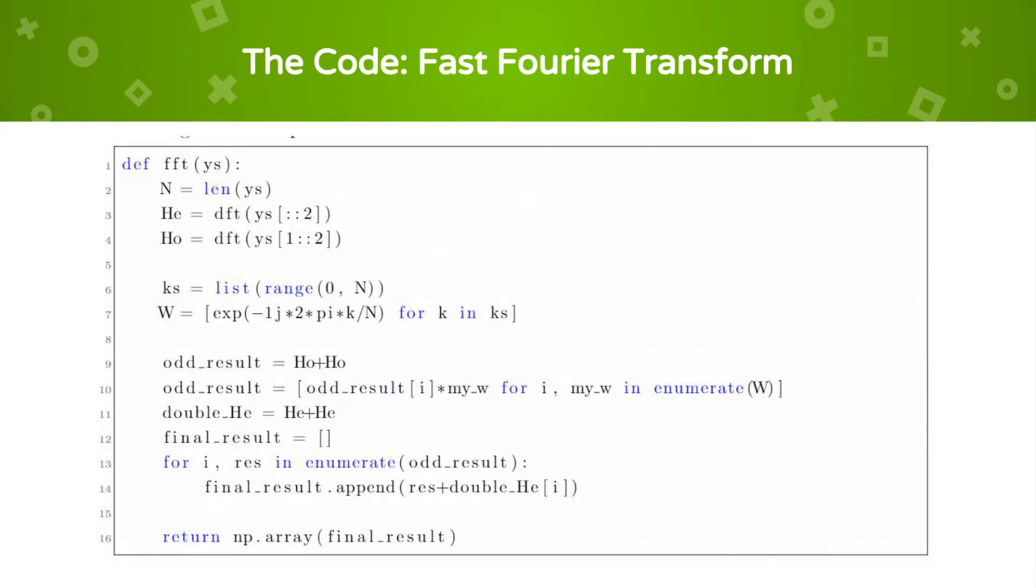Our Fast Fourier Transform function follows the equation just shown to calculate the Fast Fourier Transform of a list of values. In our Webcam Heart Monitor program, this list is a list of color values from the webcam. This function calls the discrete Fourier Transform function for the even elements and for the odd elements.